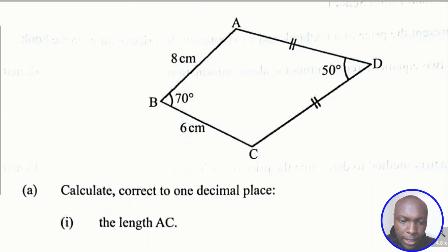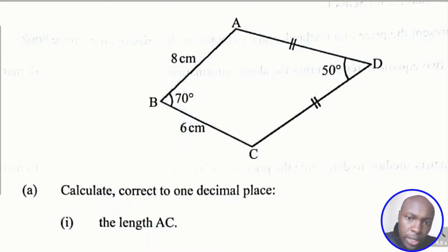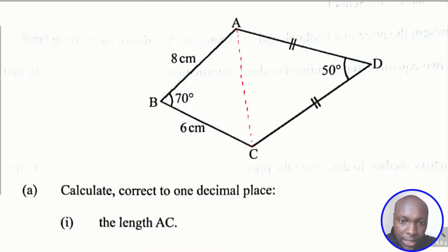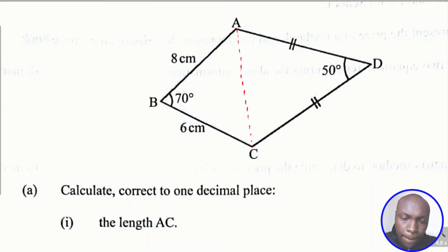For the first part, we need to find the length AC. Drawing that diagonal, the triangle we're going to use is triangle ABC. In triangle ABC we have two sides and an included angle: side AB of 8 centimeters, side BC of 6 centimeters, and the angle between them is 70 degrees. This tells us we should use the cosine rule.